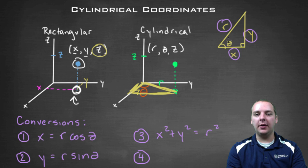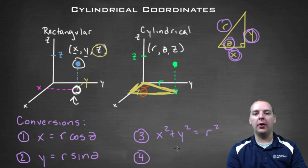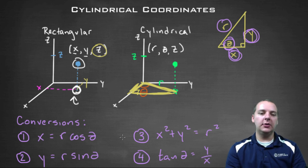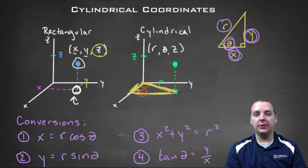And then lastly, we have a conversion between theta, y, and r, x, that doesn't include r. And that was tangent of theta equals y over x. So these are the conversions you need. Notice none of these have z in them, because you don't need a conversion for z, because z is the same in both forms.